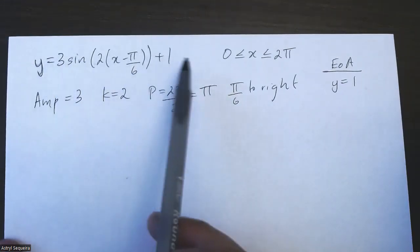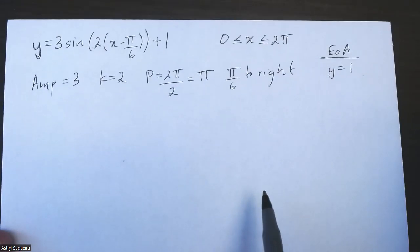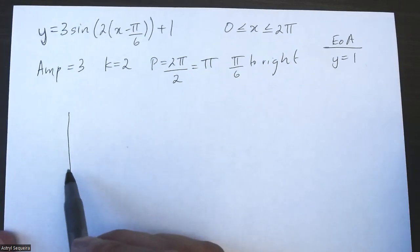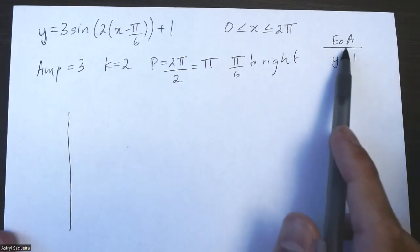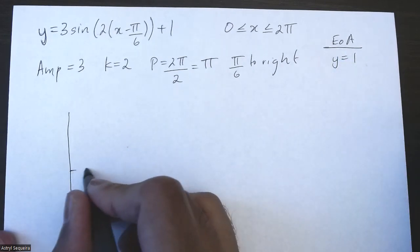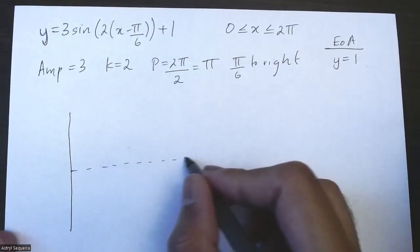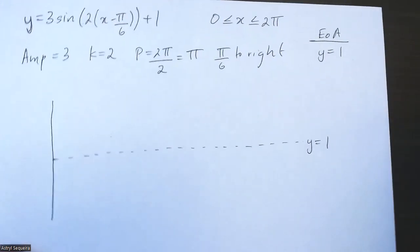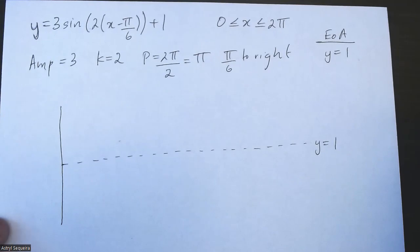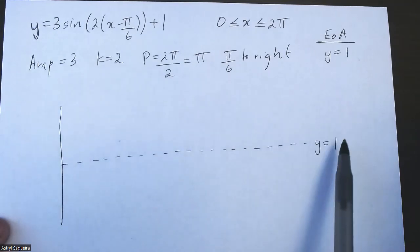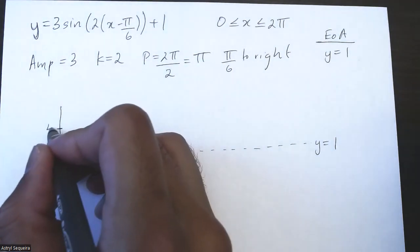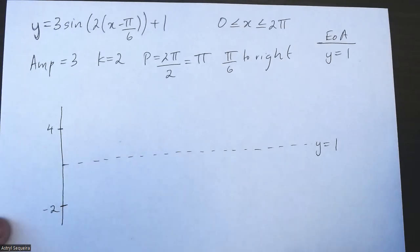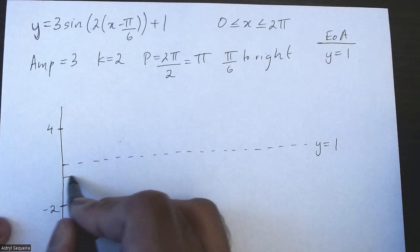First, you just have to know all the transformations. When you're sketching this function, the first thing you want to do is draw your y-axis and then draw your equation of axis in the dead center. My equation of axis is y equals one. Next, label your max and your min — amplitude is three, so one plus three gives a maximum of four, and one minus three gives a minimum of negative two. Then you can draw your x-axis, which is just slightly below one.